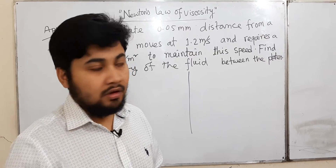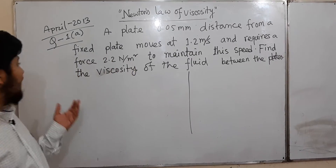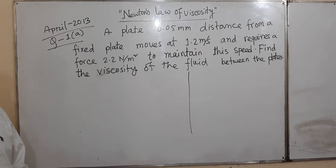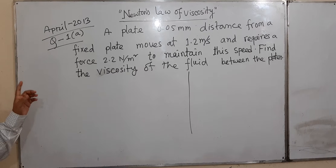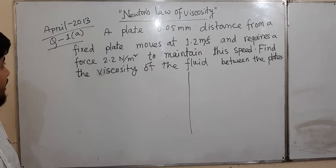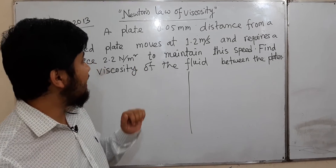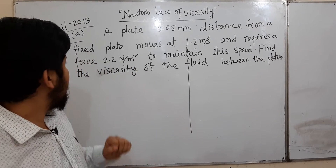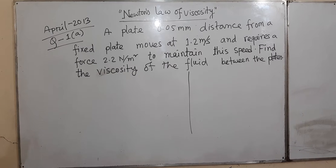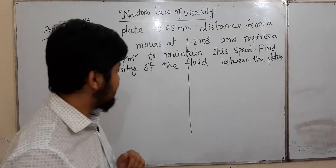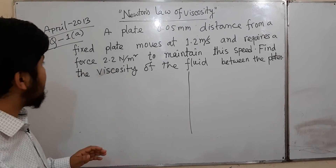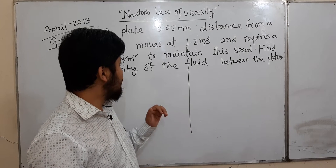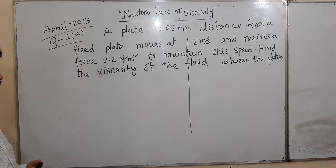This is Newton's Law of Viscosity — a numerical question from April 2013, Question 8.8. A plate 0.05 mm distance from a fixed plate moves at 1.2 m per second and required a force of 2.2 N per m² to maintain this speed. Find the viscosity of the fluid between the plates.